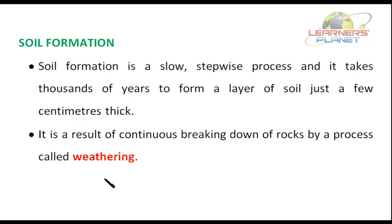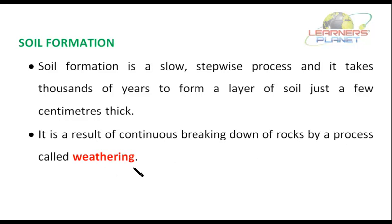Plants attract animals, and when the animals die, their bodies decay. Decaying matter makes the soil thick and rich, and this continues until the soil is fully formed, after which the soil supports many different plants. In short, soil formation is a slow, step-wise and long process that takes around thousands of years to form a layer of soil just a few centimeters thick. It is a result of continuous breaking down of rocks by a process called weathering.